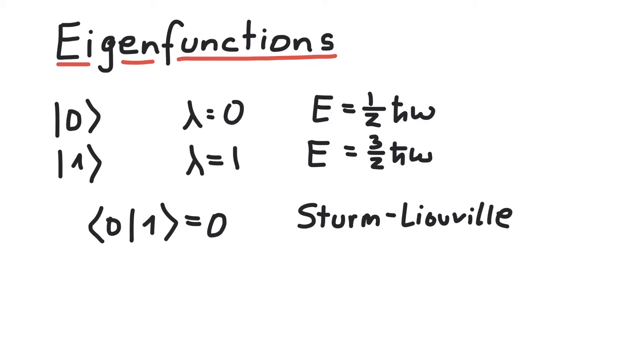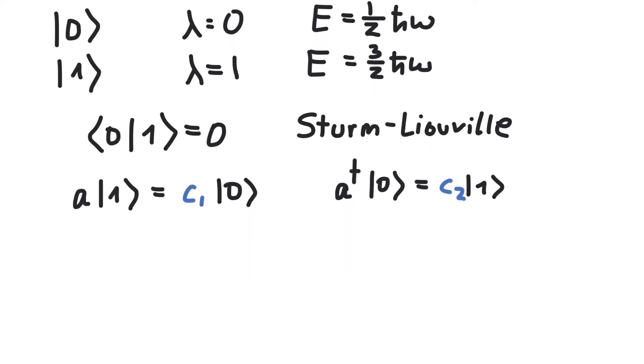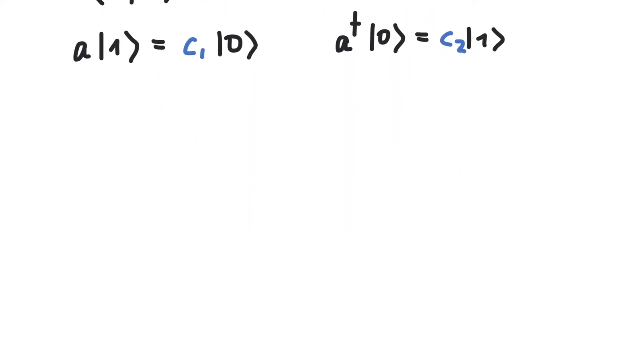On the other hand, we know that the states zero and one are related to each other via the ladder operators. For instance, applying the annihilation operator or the lowering operator a onto the state one should be proportional to the state zero, with some constant. Also, if we apply the creation operator a dagger onto state zero, this should yield state one, again with some constant. In this video, we will calculate these constants in the general case for eigenfunctions of the harmonic oscillator.